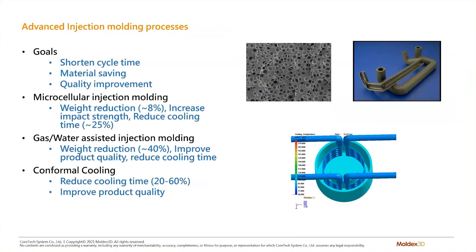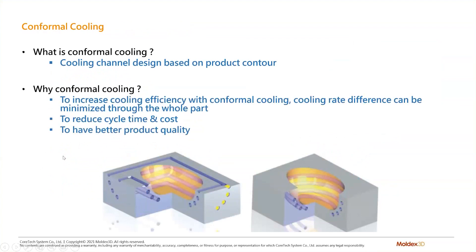There are several popular advanced injection molding processes: microcellular injection molding, gas and water assisted injection molding, and conformal cooling. Microcellular injection molding reduces part weight by about 8 percent, increases impact strength, and reduces cooling time by 25 percent. Gas and water assisted injection molding reduces part weight by up to 40 percent and improves product quality. Conformal cooling reduces cooling time by 20 to 60 percent and improves part quality depending on geometry.